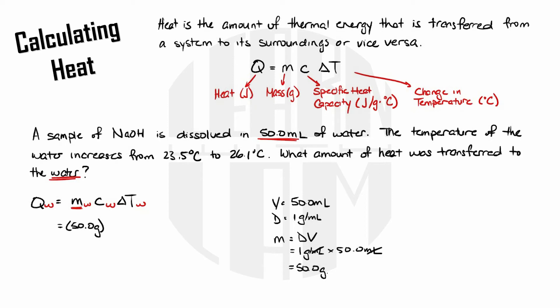As I mentioned earlier specific heat capacity is unique to each substance so we'll need to look this one up. The specific heat capacity of liquid water is 4.184 joules per gram Celsius. That leaves only the change in temperature and delta T is calculated as T final minus T initial both of which we have so 26.1 degrees Celsius minus 23.5 degrees Celsius gives me 2.6 degrees Celsius.